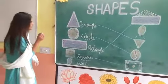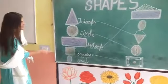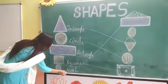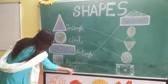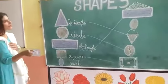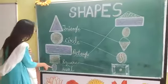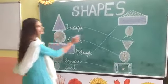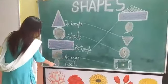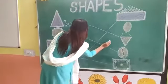Now students, come to the last shape. Which shape is this? This is oval. O-V-A-L. Oval. So students, tell me which figure looks like an oval? Egg. Yes, egg is similar to this oval. So let's match. Very good.